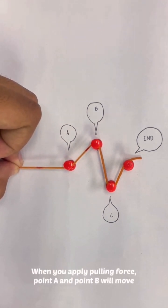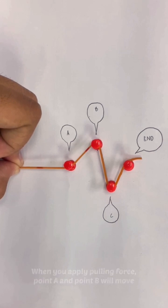So when you apply pulling force, point A and point B will move. Point C, however, is almost stagnant. As you can see, point A is traveling more than point B.